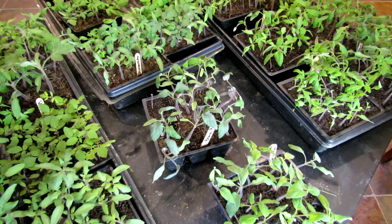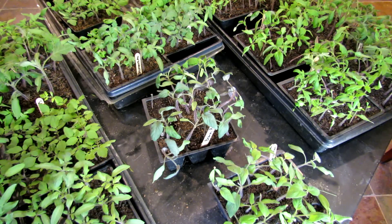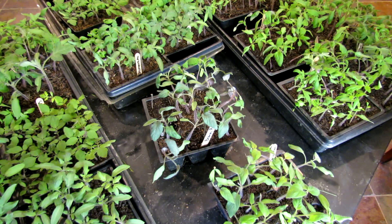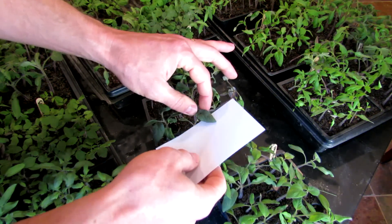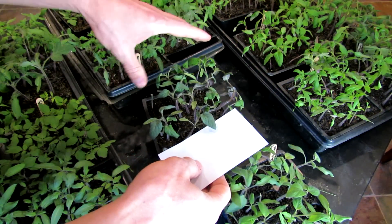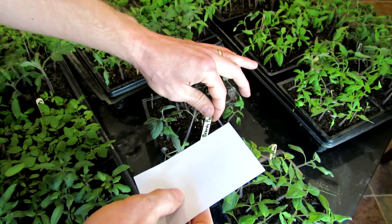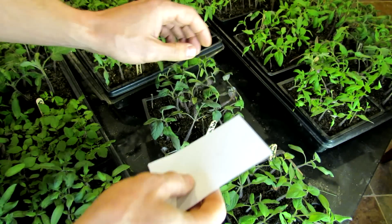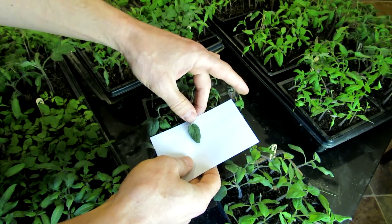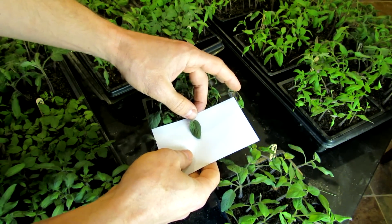There's the potato leaf, which is most prevalent in the Brandywine tomatoes if you grow those, the heirloom Brandywines. And if you look at the Brandywines, this batch of potatoes is Brandywine Pink, and you can see the leaf has no scalloping on it.